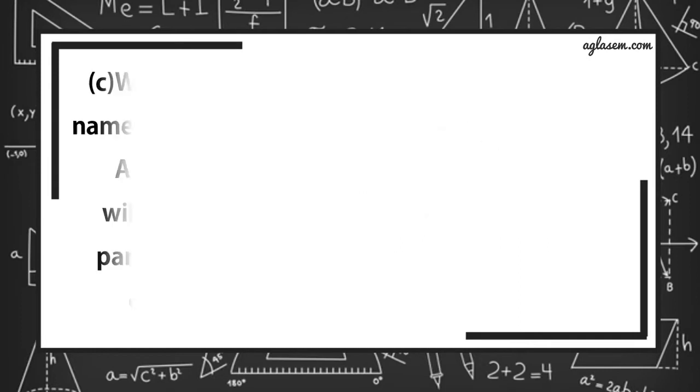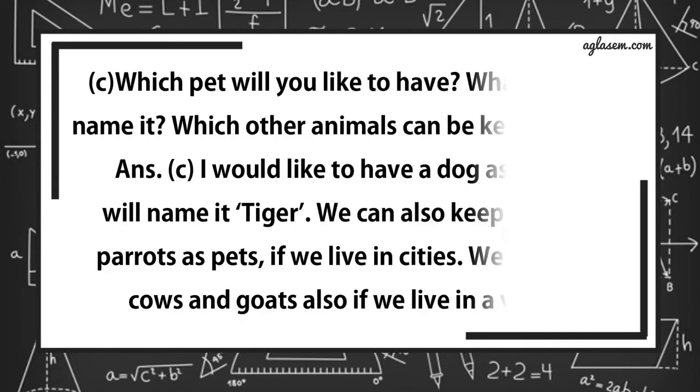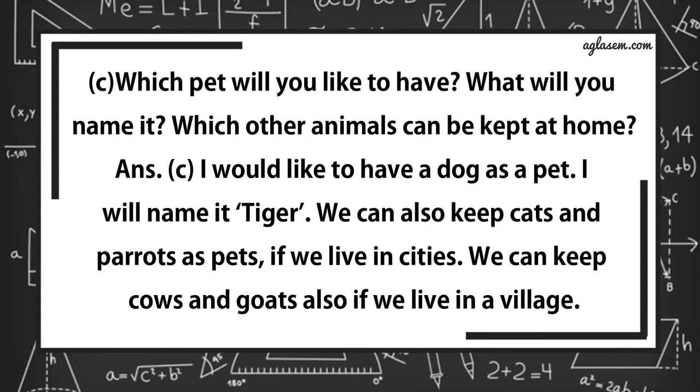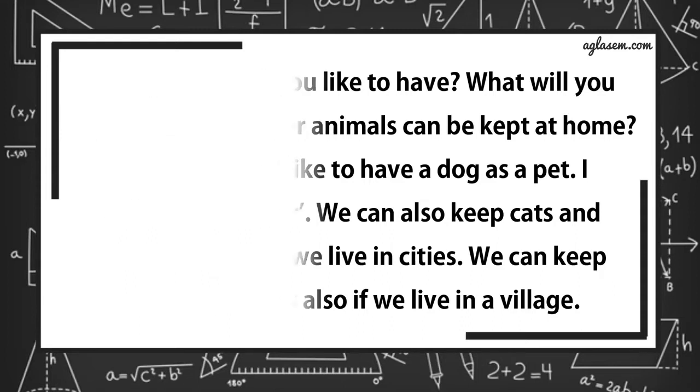For the third part, which pet will you like to have? What will you name it? Which other animals can be kept at home? Answer is, I would like to have a dog as a pet. I will name it Tiger. We can also keep cats and parrots as pets if we live in cities, and we can keep cows and goats also if we live in village.